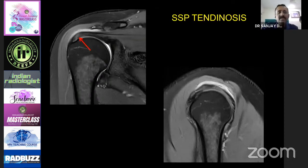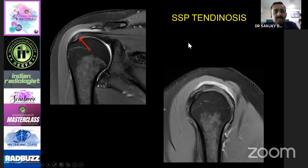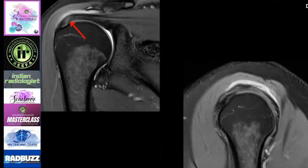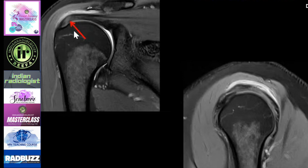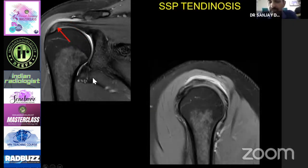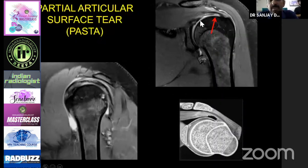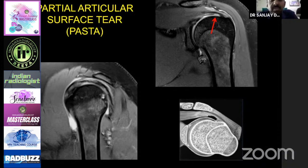The first and most important tendon to evaluate is the supraspinatus. Degeneration progresses from tendinosis right up to a tear. What starts is the degenerative signal called supraspinatus tendinosis — appearing as slight swelling of the tendon with bright signal on PD fat-sat images. You may or may not find inflammatory fluid in the subacromial bursa. This further progresses from mild to moderate and severe tendinosis. When the tendon signal becomes as bright as joint fluid, you call it a tear. We no longer use the term tendinitis, as there is no true inflammation.